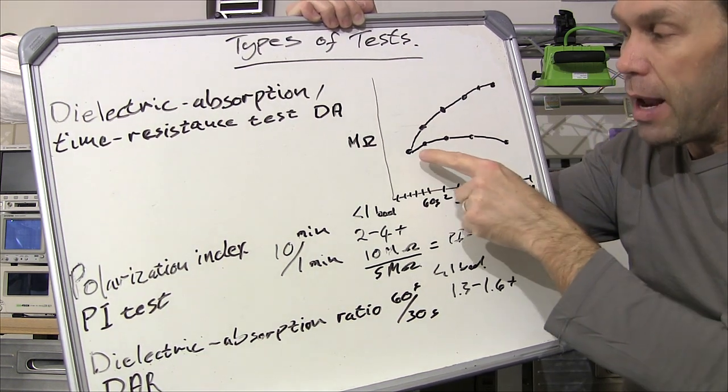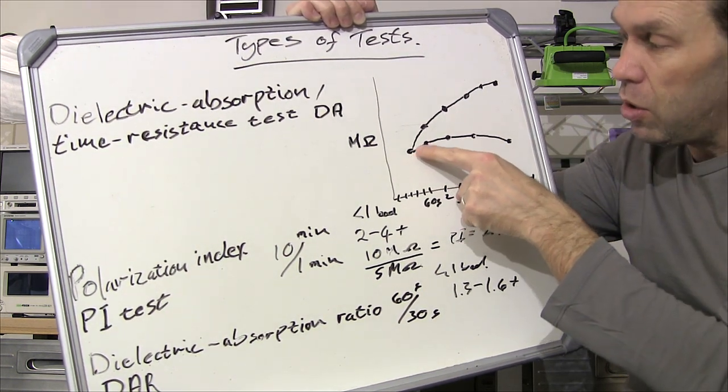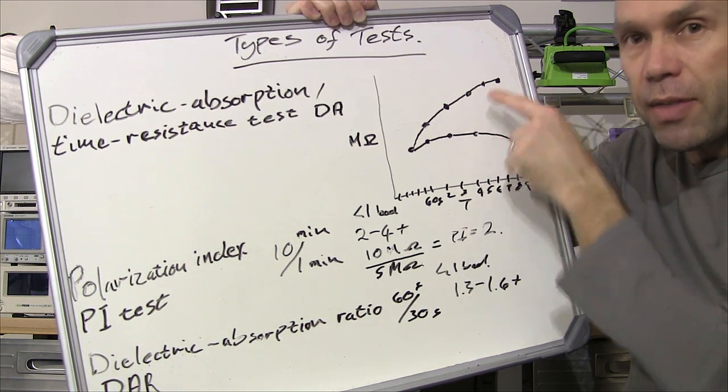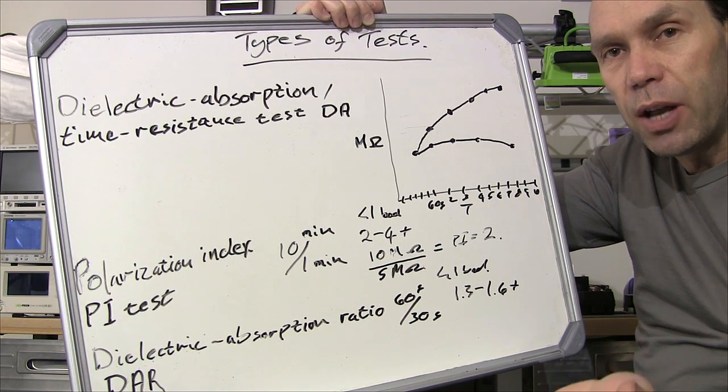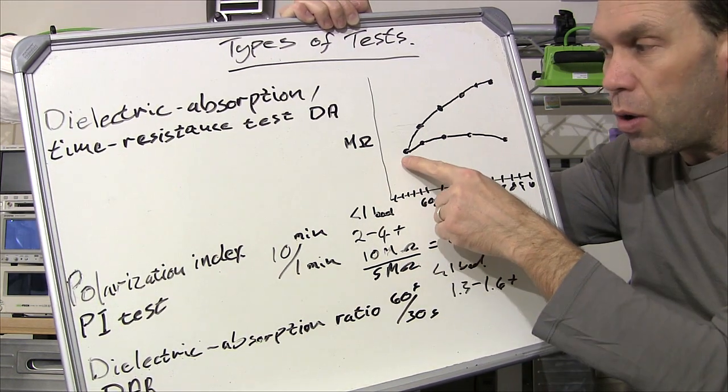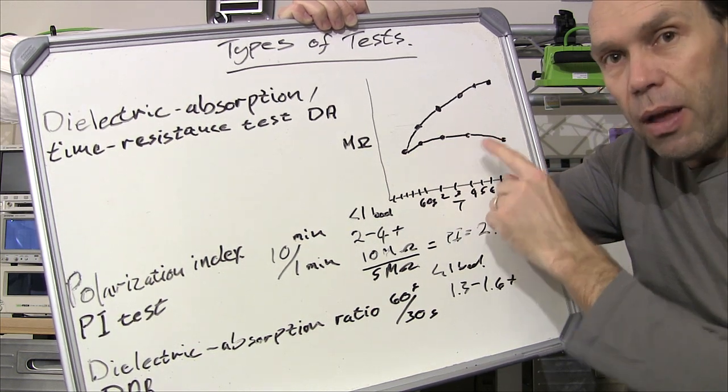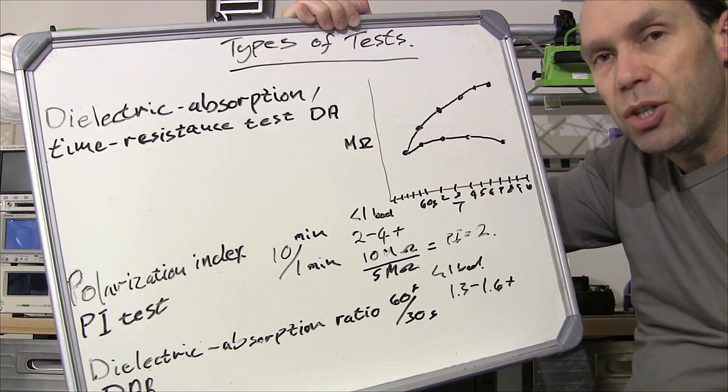So this is quite a long test and you'd start plotting that and you'd end up with a curve. And as an example what you want to see is this curve on the top which is gradually going up as the resistance gets higher and that's obviously an indication that you've got a good insulation.